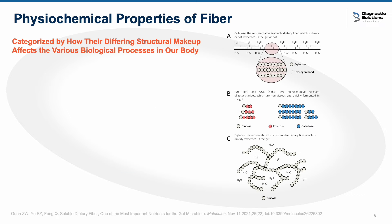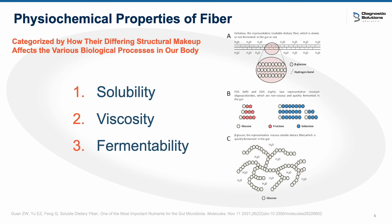To help organize the different subtypes of fiber, there are three main classifications established to help correlate how the chemical structures of various fibers have differing physiological effects on our bodies — in short, their physiochemical properties. The three main physiochemical classifications for fiber are solubility, viscosity, and fermentability.